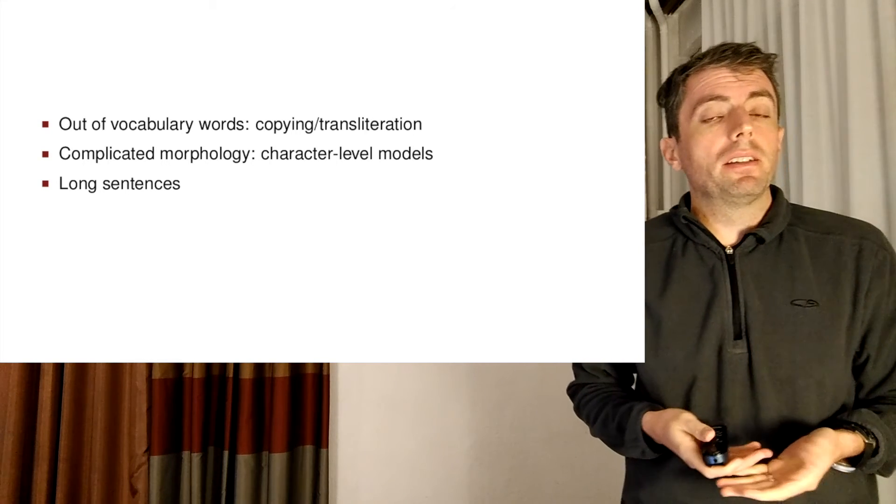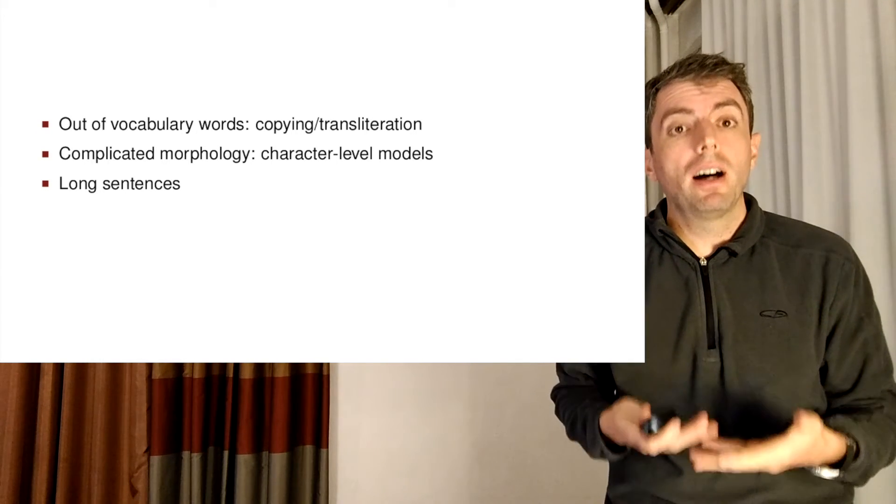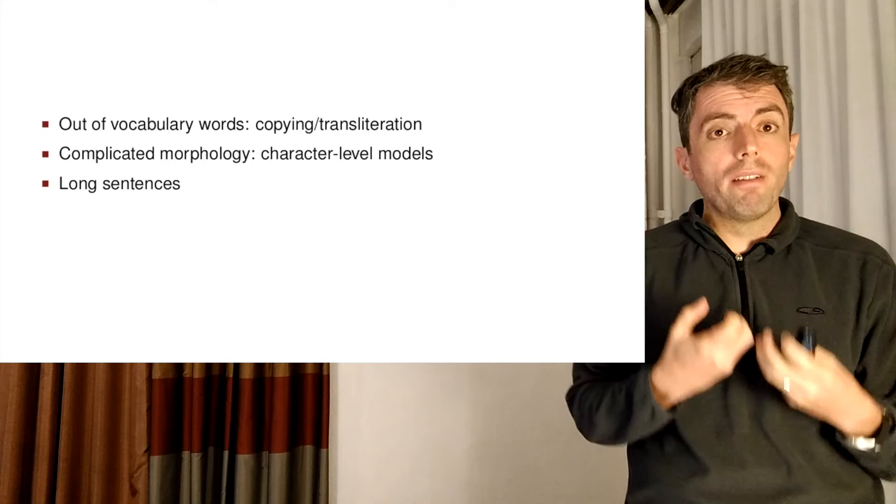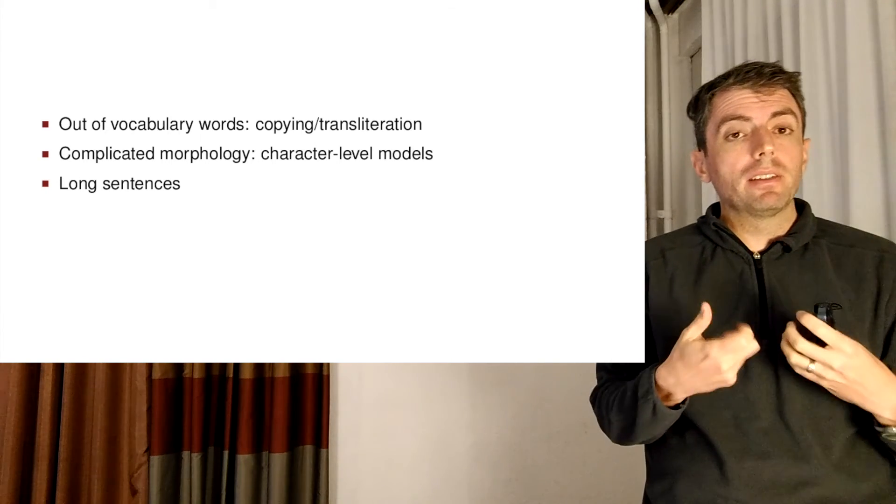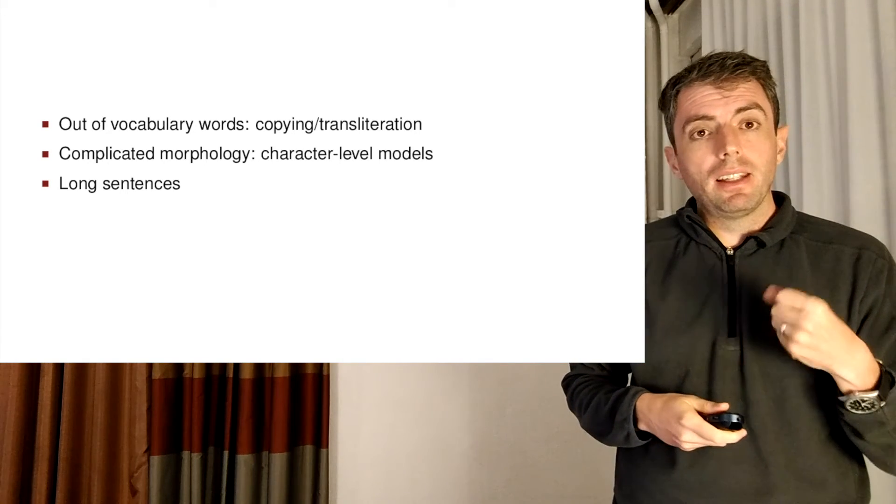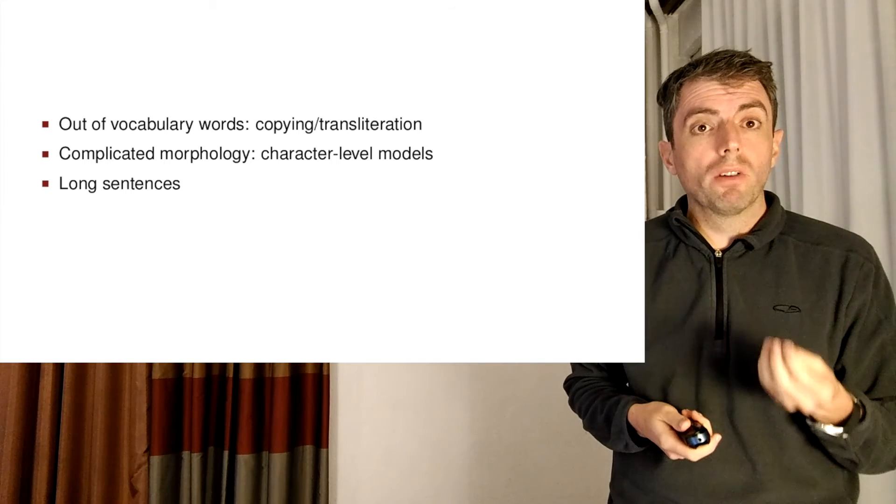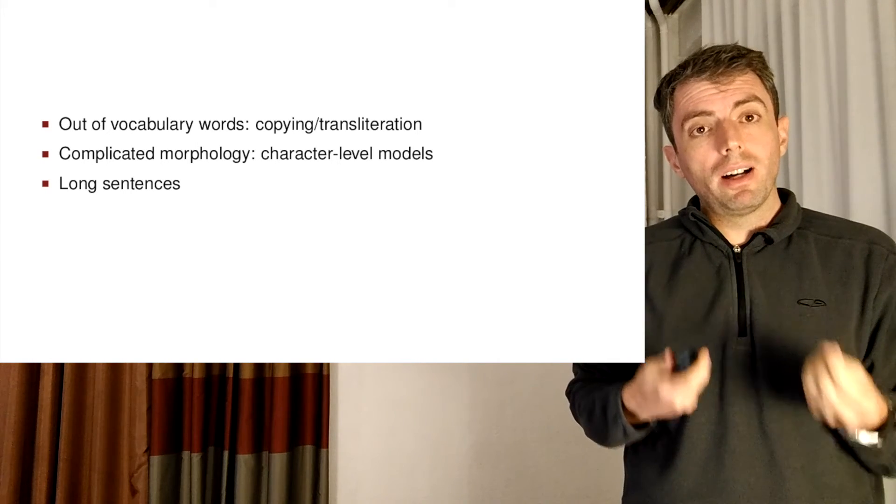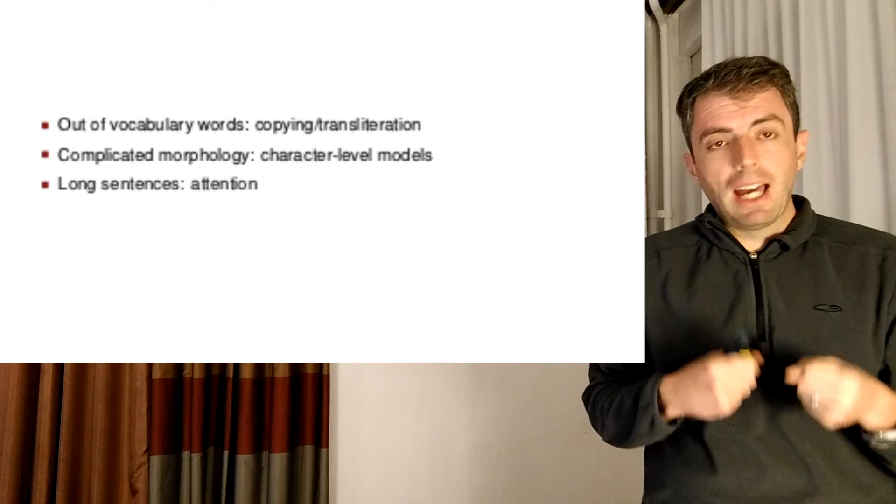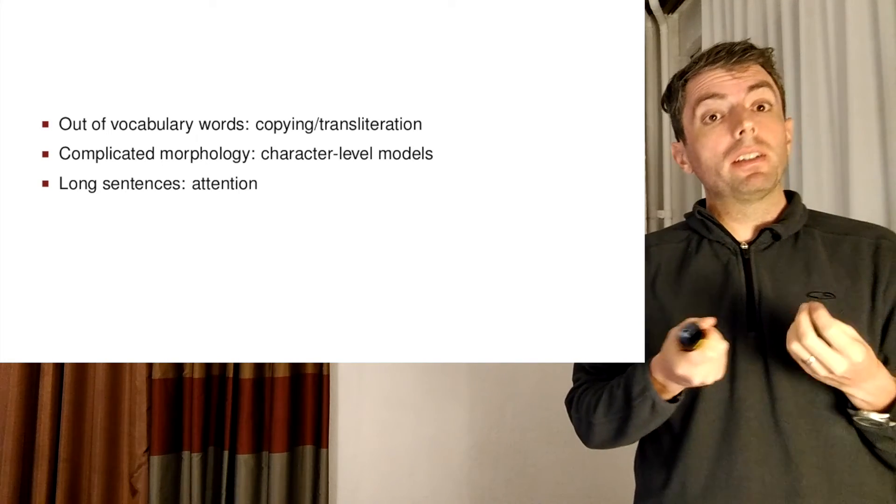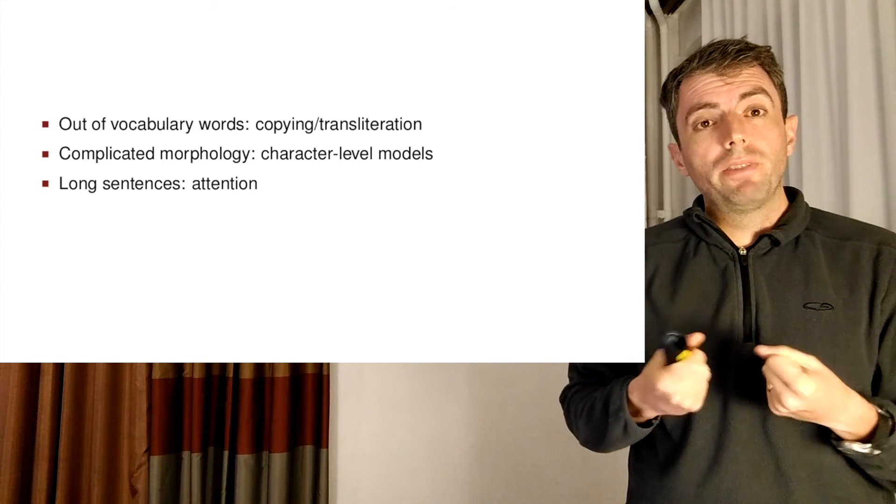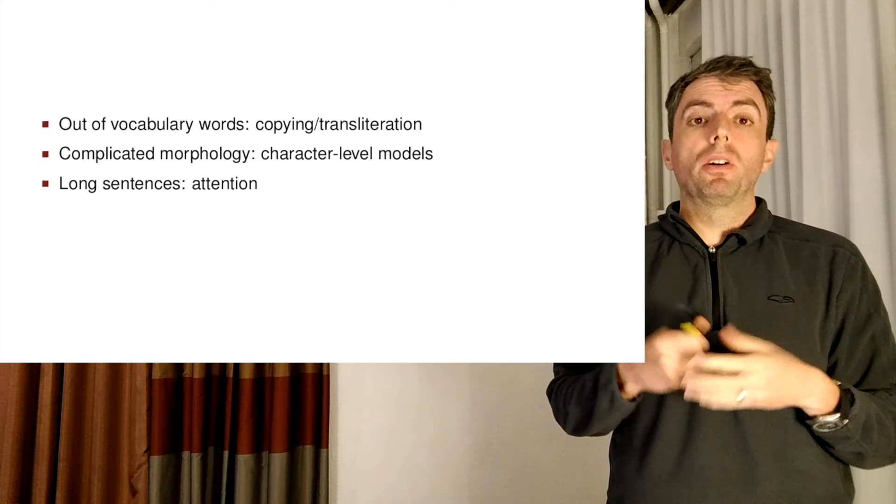And for longer sentences, something like an RNN will fail because it is trying to cram an entire sentence into one vector. And that doesn't work. A vector doesn't have the capacity to encode a very long sentence. And here we're going to do something very similar to what we did for phrase-based methods. We're going to use more context to translate each of the target language words. And we're going to do this through something called attention.